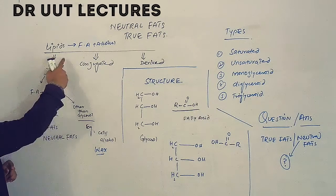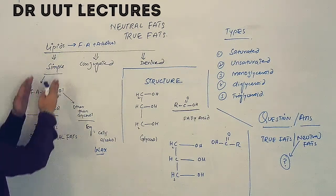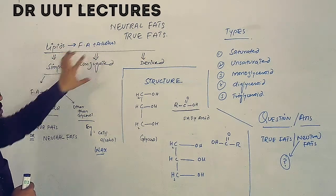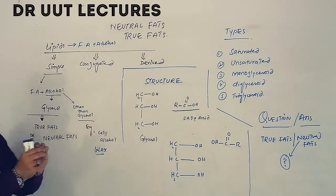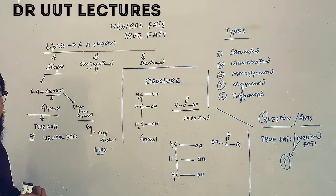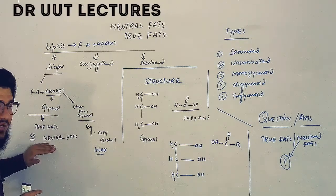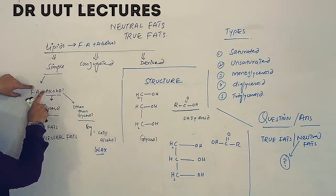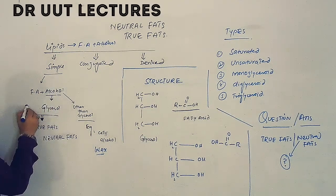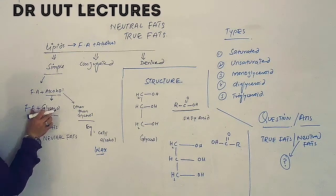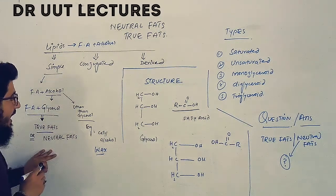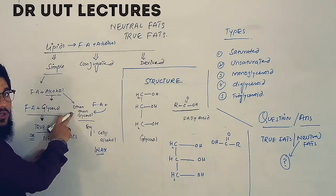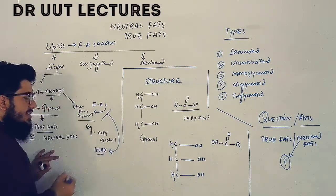Our neutral fats and true fats lie in the simple lipid classification. In simple lipids, a fatty acid and alcohol combine to make simple lipids, which are further divided into two: neutral fats or true fats, and wax. The difference lies in the alcohol used. If fatty acid combines with glycerol, we get true fats or neutral fats. If fatty acid combines with an alcohol other than glycerol, we get wax.